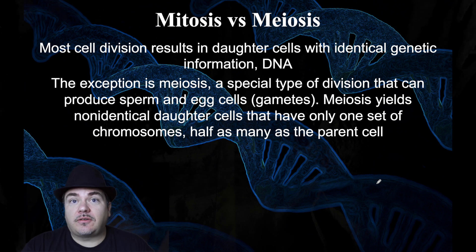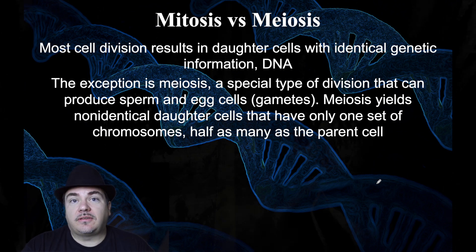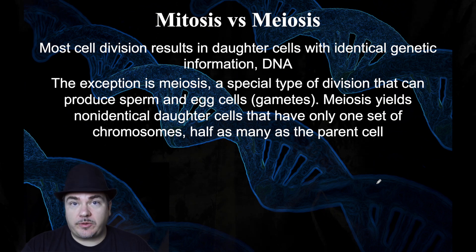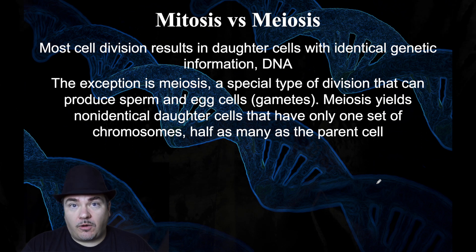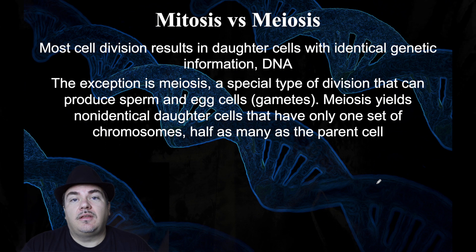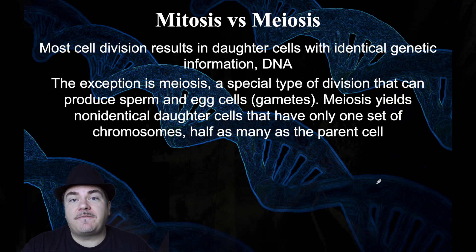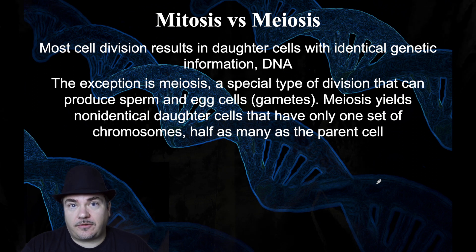The other type of cell division is called meiosis. Meiosis is the type of cell division used to produce the gametes — the reproductive cells, which would be the sperm cell and the egg cell. In humans, the only cells made by meiosis are the gametes. Meiosis yields non-identical daughter cells that have half as many chromosomes as the cell they came from.